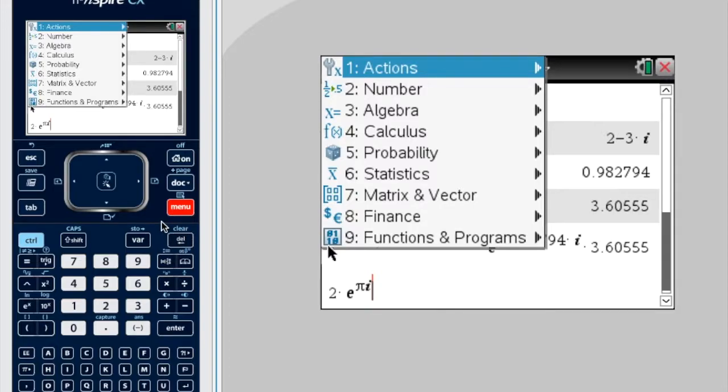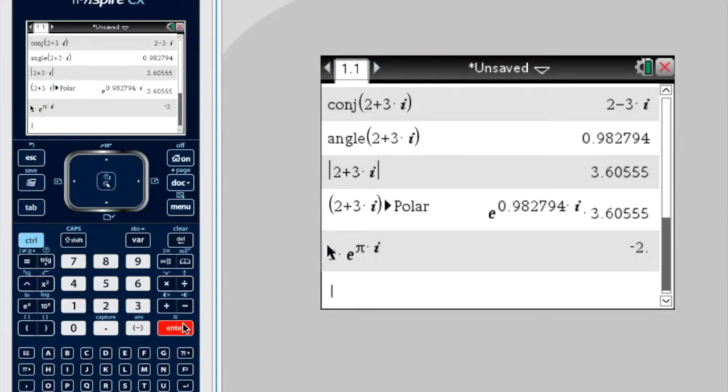So let's press enter. Oops. Enter. Okay, now why is it just negative 2?